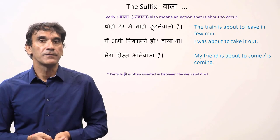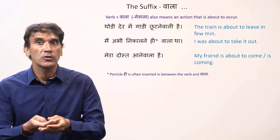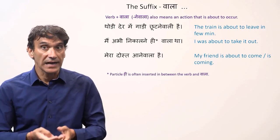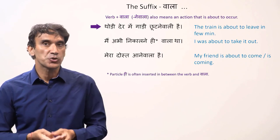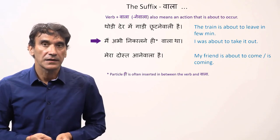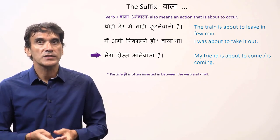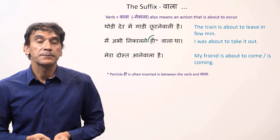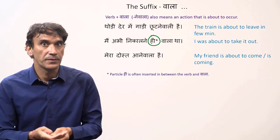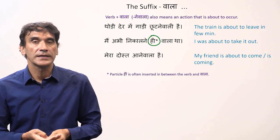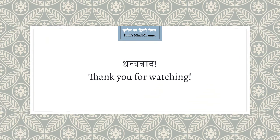The same form — verb plus wala — can also mean an action that is about to occur in the near future. The precise translation would be something about to happen. For example: thodi der mein gaadi chootne wali hai — the train is about to leave in a few minutes. Mein abhi nikalne wala tha — I was about to take it out. Mera dost aane wala hai — my friend is about to come. Sometimes the particle 'hi' is inserted between the verb and the suffix wala, as in the second example.